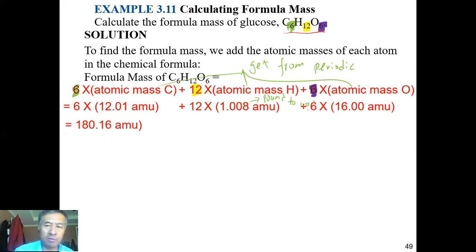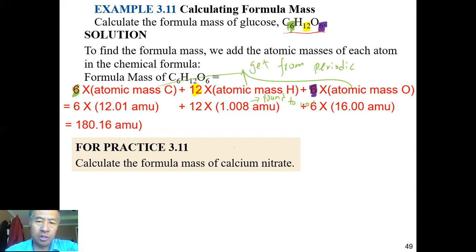You multiply those numbers and add them together: 6 times 12.01, plus 12 times 1.01, plus 6 times 16.00, to get 180.16 AMU. As further practice, calculate the formula mass of calcium nitrate.